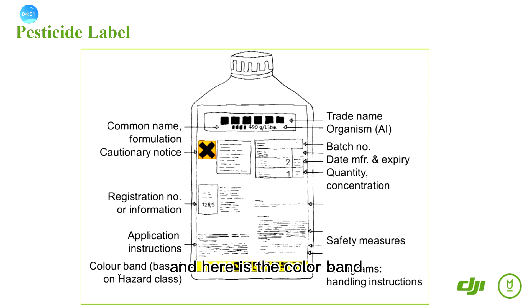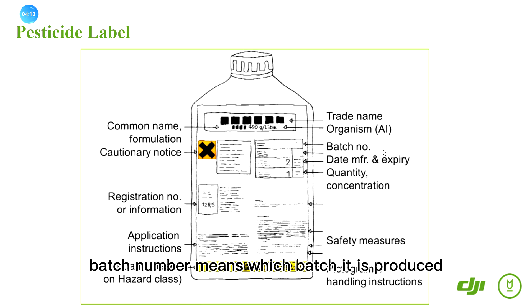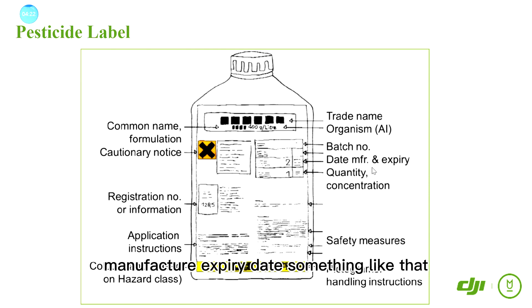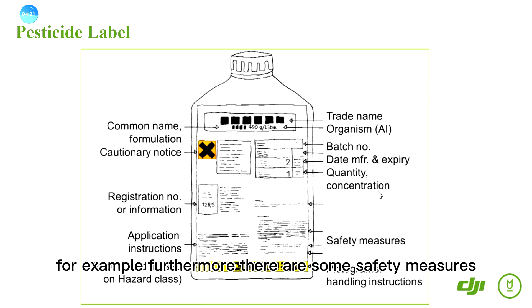Here is the color band, which is based on Hazard class. On the right, you can find the batch number — the batch number indicates which production batch it came from at the manufacturer. There is also more information, for example, the date, manufacturer name, expiry date, as well as the quantity and concentration.